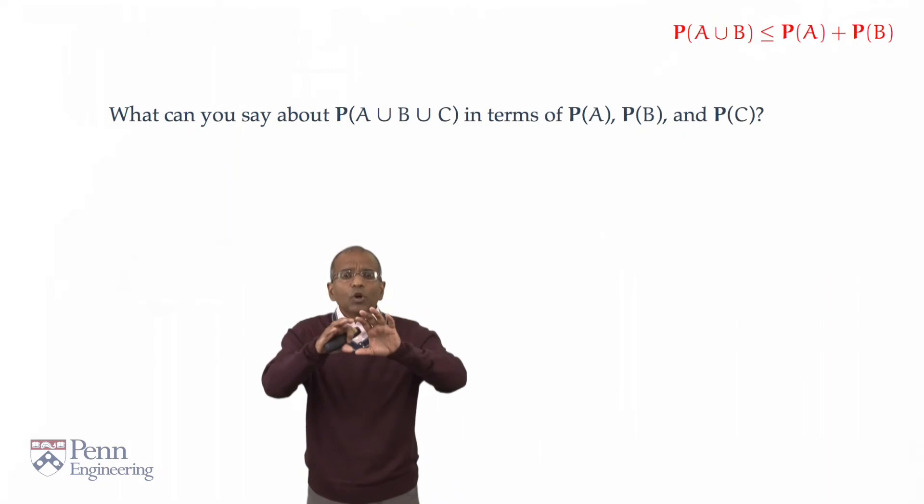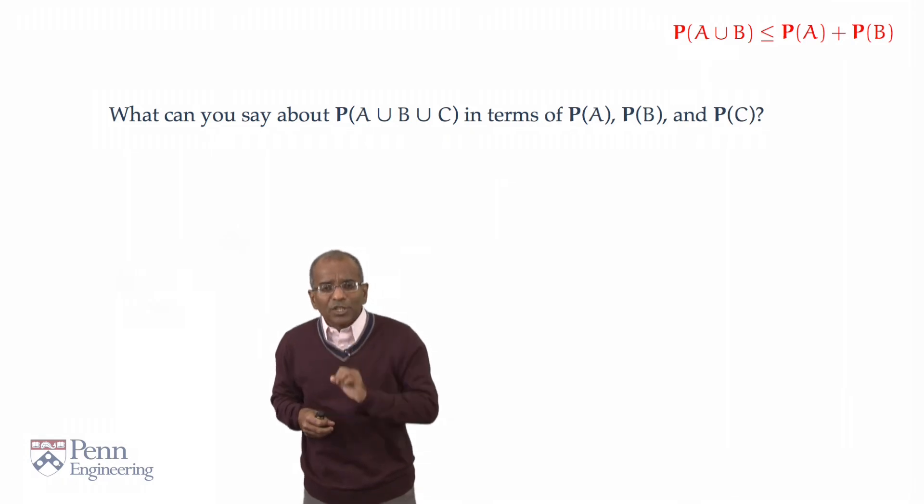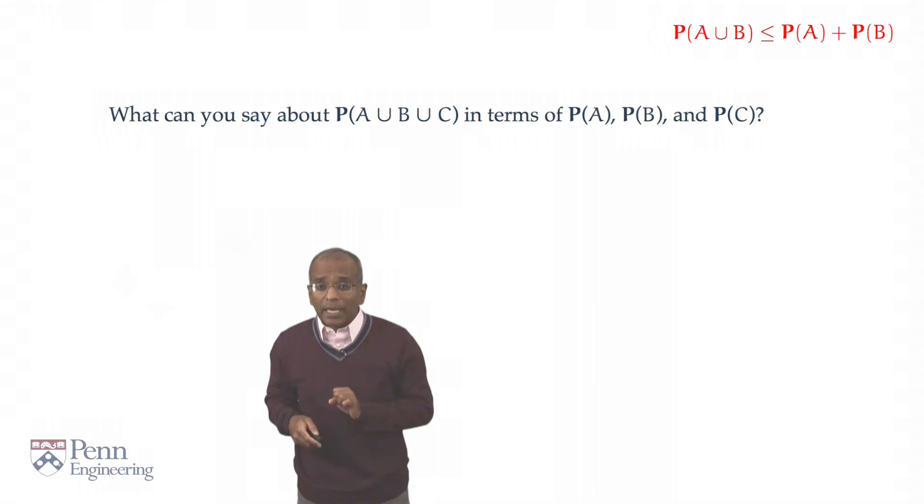Let's start with this and immediately see what else we can do with this kind of idea. So to begin, we've got Boole's inequality. The probability of a union is no larger than the sum of two probabilities. What can we say now about the probability of the union of three elements? Pause the lecture and see if we can make headway on this. Restart when you're ready.